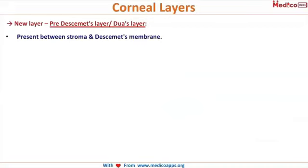A new layer has been added to the five layers — it is called the pre-Descemet's layer, or the Dua's layer. We can proudly say that Indian doctor Dr. Harminder Dua discovered this layer, and hence it is named after him. This layer is present just in front of Descemet's membrane — that is, after the stroma and before Descemet's membrane.